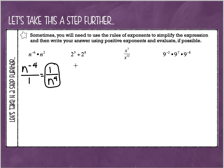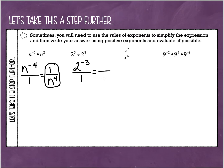This time we have a division problem, so I keep my base of 2 and subtract the exponents: 5 minus 8 is negative 3. I'm going to turn this into a fraction because I don't want a negative exponent — I want that negative exponent to be positive. If I have an exponent of negative 3 and I want it to be positive, I move it from the numerator down to the denominator and put a 1 as my placeholder. 2 to the 3rd power simplifies: 2 times 2 times 2 equals 8. So when I evaluate this expression completely, it equals 1 over 8.